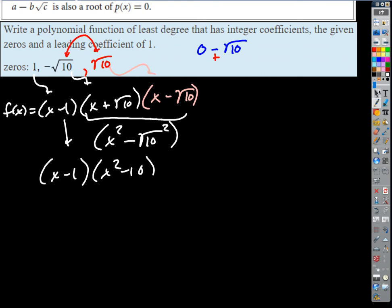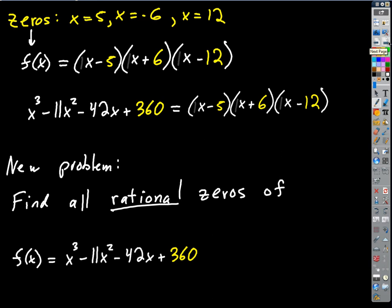That takes us through the first half of the last assignment. Let's see a pattern. We did this problem earlier and got x cubed minus 11x squared minus 42x plus 360. We started with zeros 5, negative 6, and 12, and multiplied out the factors x minus 5, x plus 6, x minus 12. The leading term of the final polynomial is always the product of the leading terms of each factor — x times x times x is x cubed.